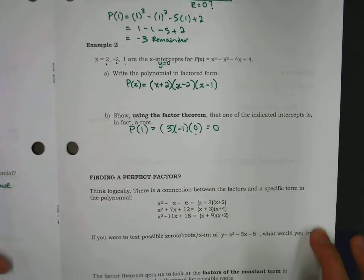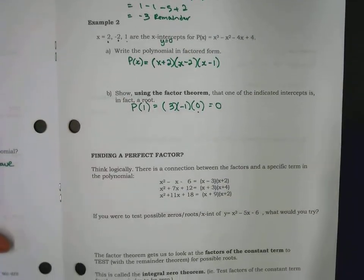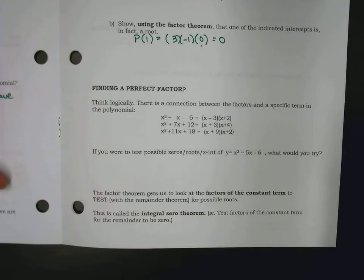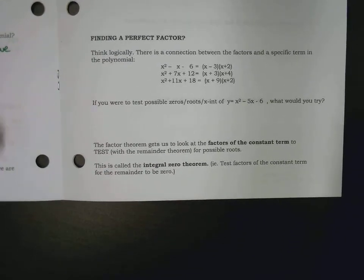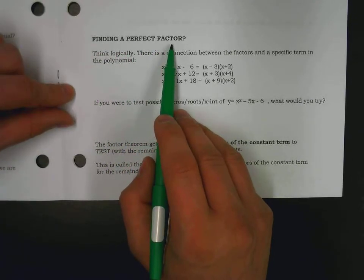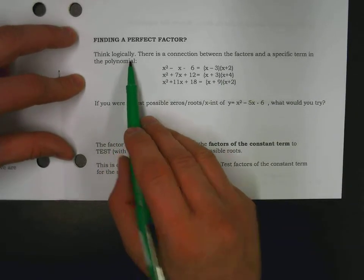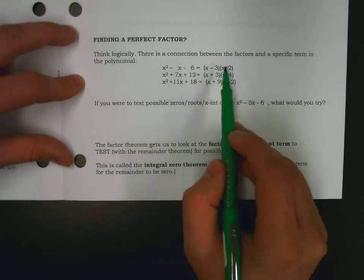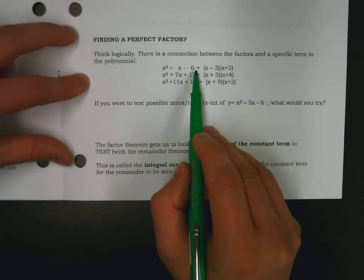And that's creating your x-intercept, your y-value of zero, your remainder of zero. So, I've been talking very conveniently about giving you factors, giving you x-intercepts. But, ultimately, we won't always be told one of the factors or one of the x-intercepts. And under the heading of finding a perfect factor, how do we do that becomes our next goal. And we do need to think very logically.